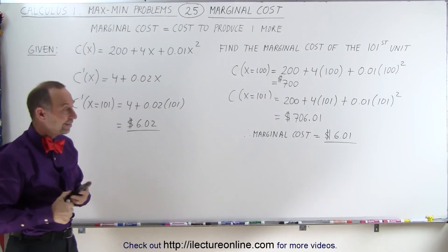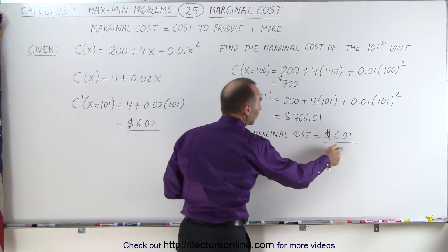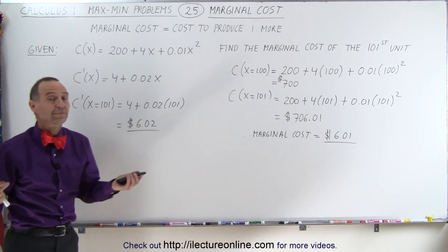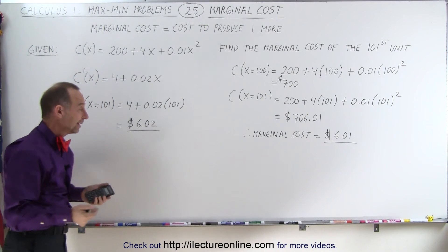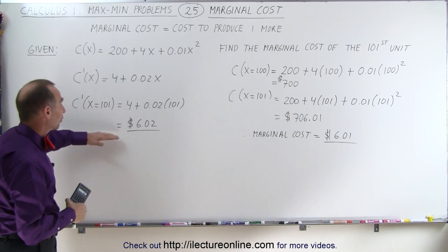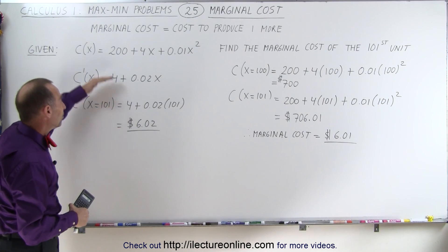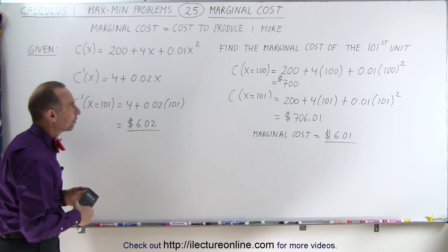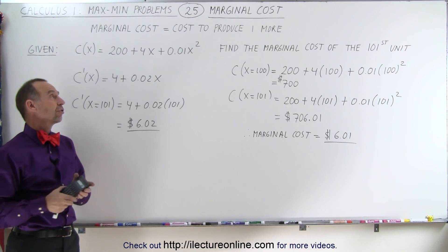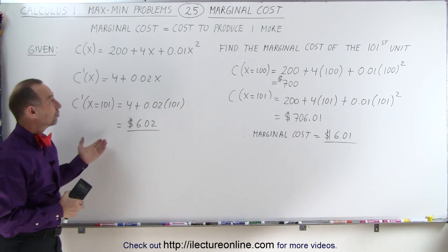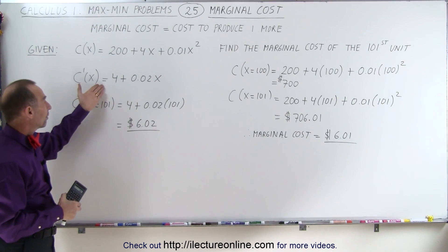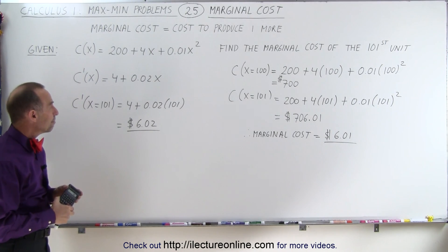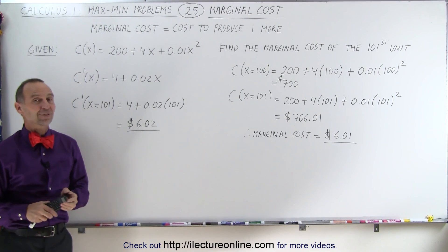The derivative result of $6.02 is the approximate marginal cost, while $6.01 is the exact marginal cost. But if we're only off by about one penny, that's a pretty close and good estimate — a much easier way to derive that result. So this is an additional interesting concept using the first derivative by calculating the marginal cost, and that's how it's done.